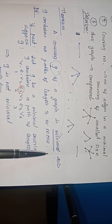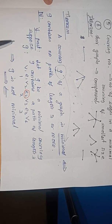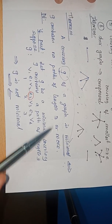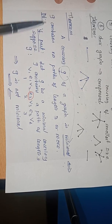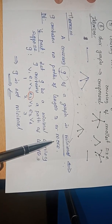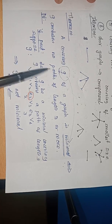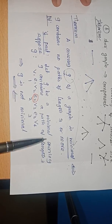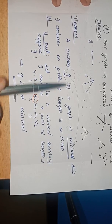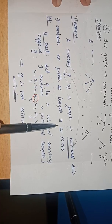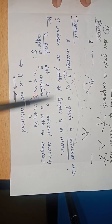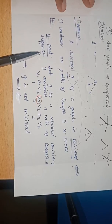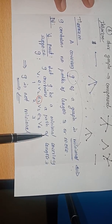So I have to split the proof into two cases — the if part and the converse part. First, I take G as a minimal covering and prove that G contains no path of length 3 or more. In the converse part, I assume G contains no path of length 3 or more and justify that G is minimal. Now let me start with the if part. I am going to prove this by the method of contradiction — I assume G contains a path of length 3.